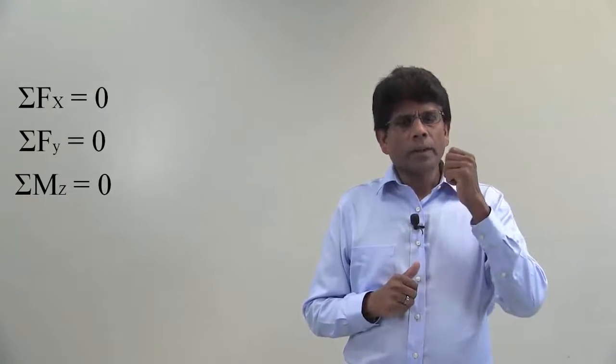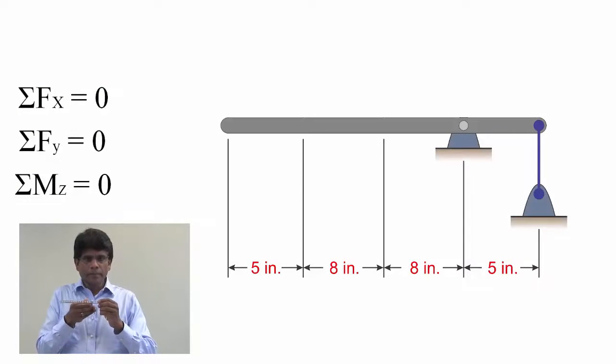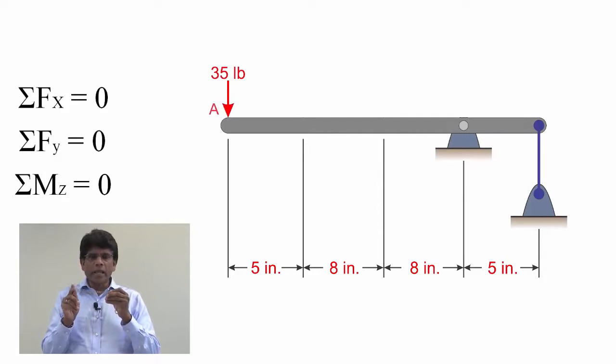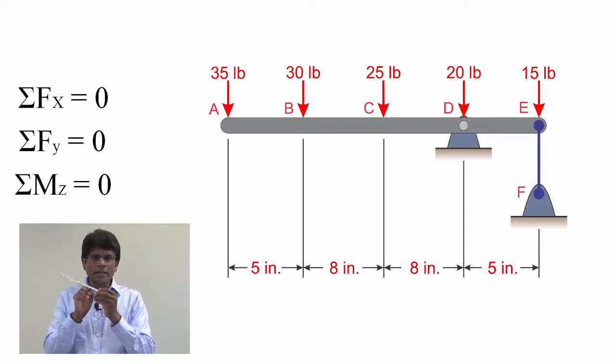Now let's take a look at a particular problem. Here I have a beam that is loaded at various points at A, B, C, D, and E. This beam is supported by a pin joint at D and a cable at point E.